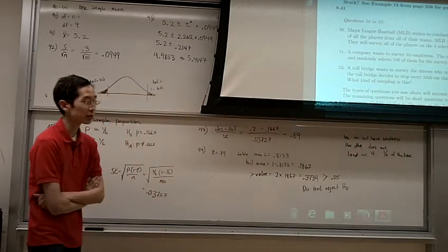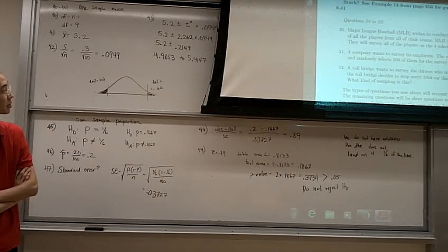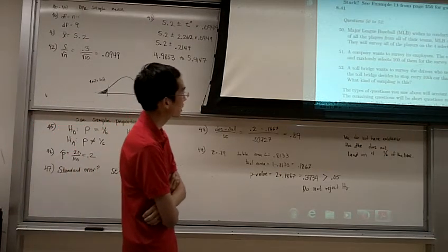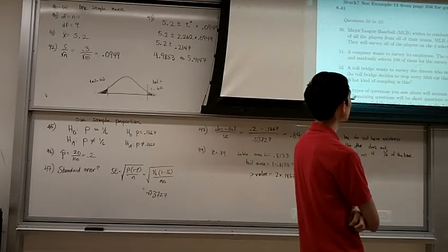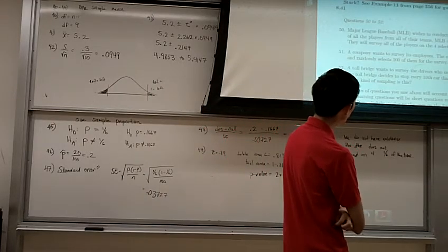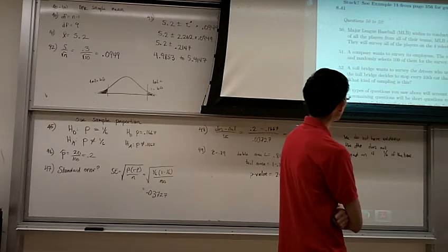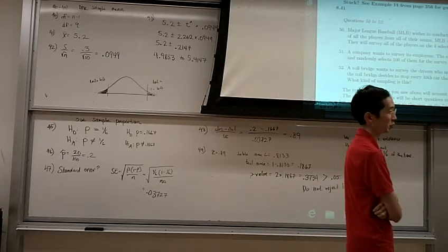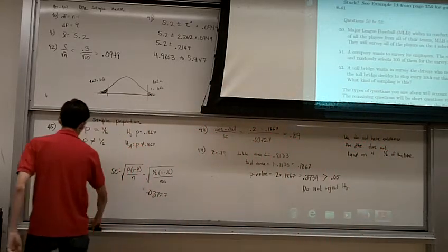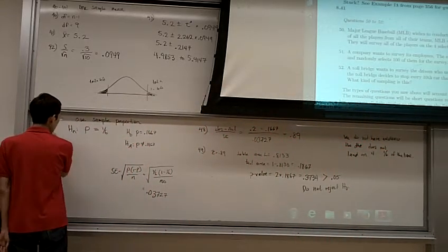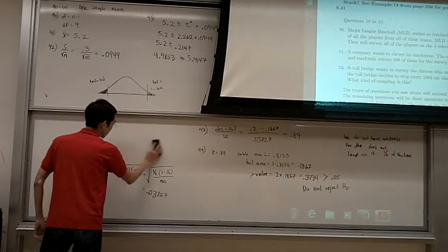Number 50, it says Major League Baseball wishes to conduct a survey of its players. Instead of trying to create a list of all the players from all the teams, MLB decides to randomly select four of their 30 baseball teams, and they will survey all of the players on the four selected teams. What kind of sampling is this? So don't shout out your answer, think about it, and I will write up what the possible sampling methods are.